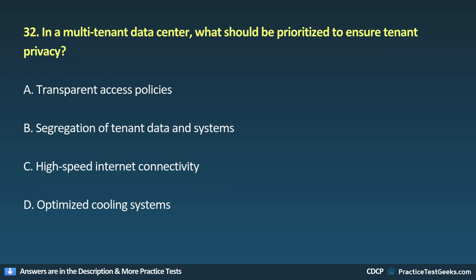Question 32. In a multi-tenant data center, what should be prioritized to ensure tenant privacy? A. Transparent access policies. B. Segregation of tenant data and systems. C. High-speed internet connectivity. D. Optimized cooling systems.